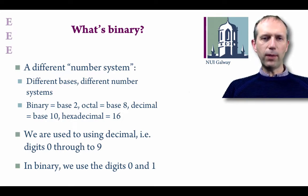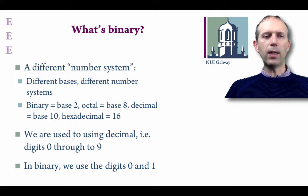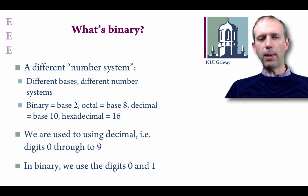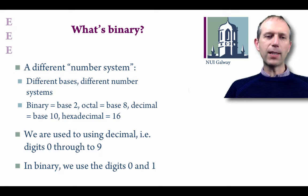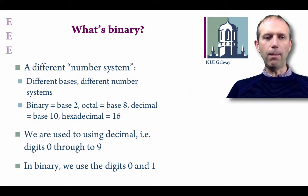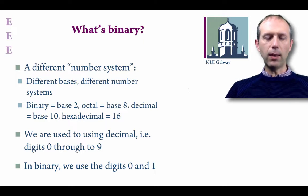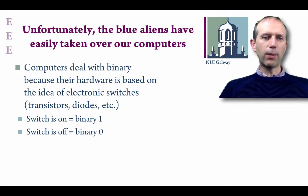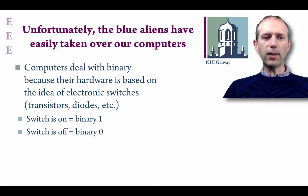Binary is a different number system — I've alluded to it before in previous videos. We have different types of number systems with different bases. Binary is base two, meaning we use two digits: zero and one. Octal is base eight, using digits zero through to seven. We're used to using decimal, which is base ten, using digits zero through to nine. Hexadecimal is base sixteen, using digits zero through to nine plus additional letters — A, B, C, D, E and F — to represent the numbers ten through to fifteen.